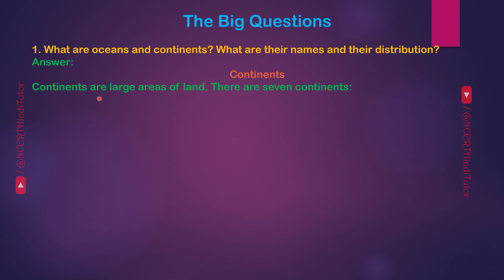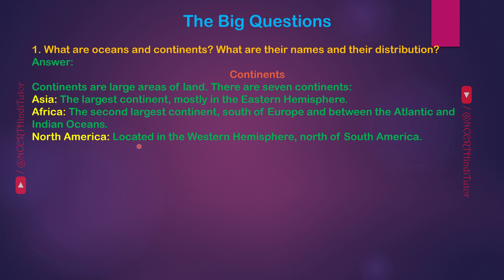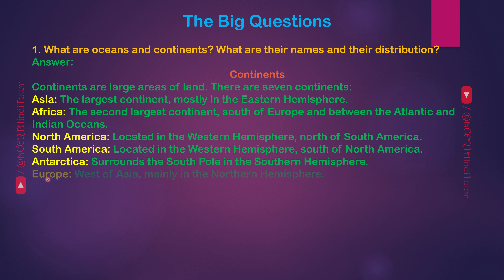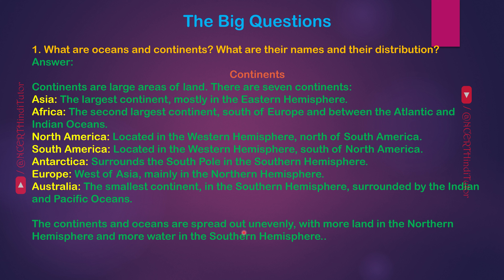Continents are large areas of land. There are 7 continents. First, Asia — the largest continent, mostly in the Eastern Hemisphere. Second, Africa — the second largest continent, south of Europe and between the Atlantic and Indian Oceans. Third, North America — located in the Western Hemisphere, north of South America. Fourth, South America — located in the Western Hemisphere, south of North America. Fifth, Antarctica — surrounds the South Pole in the Southern Hemisphere. Sixth, Europe — west of Asia, mainly in the Northern Hemisphere. Seventh, Australia — the smallest continent, in the Southern Hemisphere, surrounded by the Indian and Pacific Oceans. The continents and oceans are spread out with more land in the Northern Hemisphere and more water in the Southern Hemisphere.